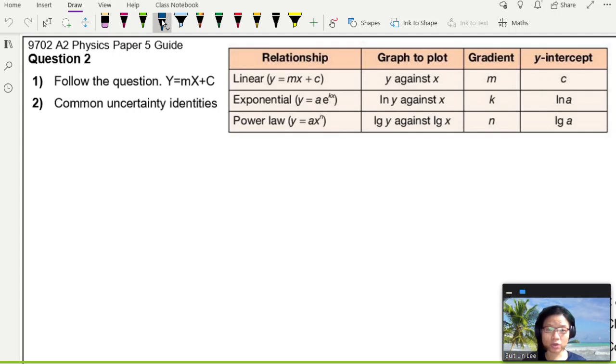So for question 2, you are normally given an equation or a relationship, but there are a few types of relationship or possible relationships that they can give you. The easiest one that you can hope for is the linear one, our favorite y equal to mx plus c. And if not, sometimes we will have exponents, sometimes we will have power. CIE expects you to be able to, based on the equation, linearize the graph. Meaning you understand how to obtain a straight line graph based on whatever equation that they throw at you. And from the straight line graph, you can tell what the gradient and the y-intercept is.